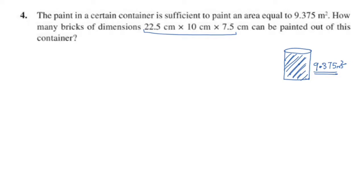First, we need to find the total surface area of one brick. This is the total surface area of one brick. The length is 22.5 cm, the breadth is 10 cm, the height is 7.5 cm.